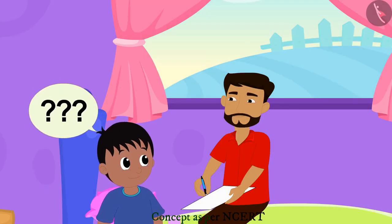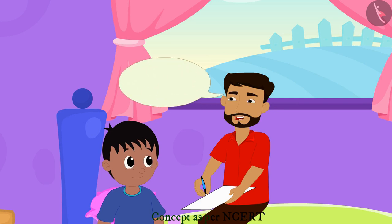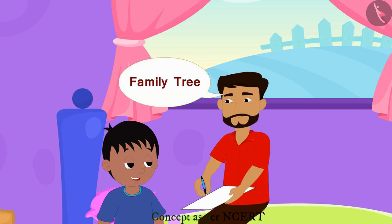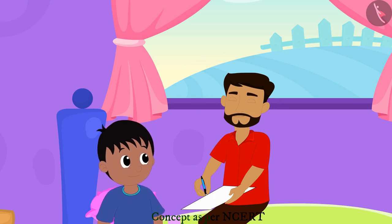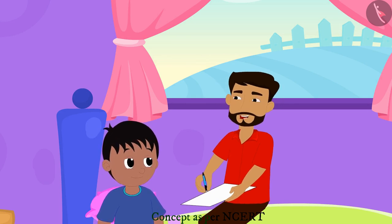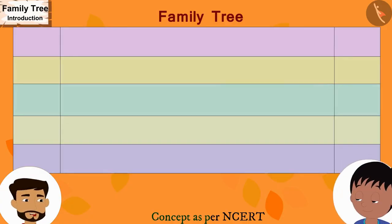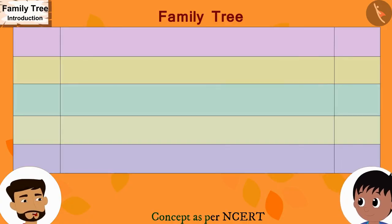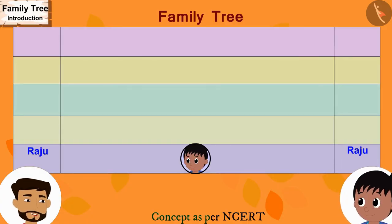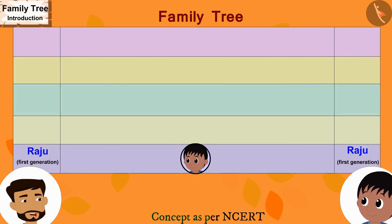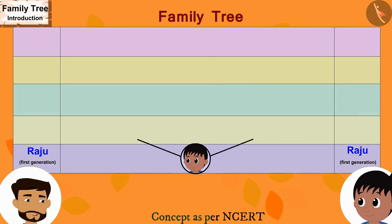Raju asks what his father is making, and his father says he is making their family tree. Raju asks what that is. His father explains that the family tree is a picture in which we depict all the relatives of our family. He begins by writing Raju's name on the paper as the first generation, then draws two lines above Raju's name and writes his mother's name and his own name.